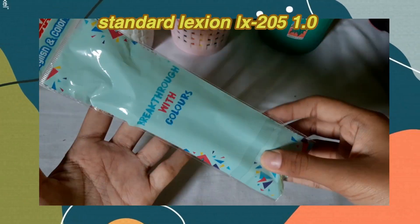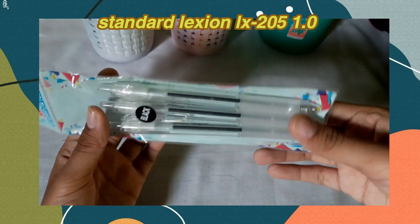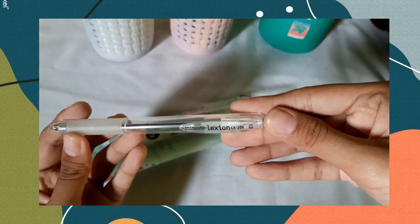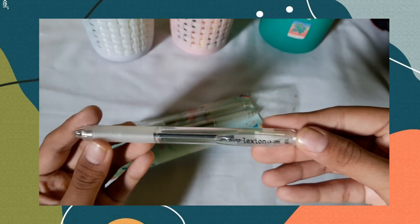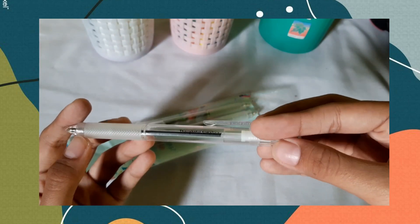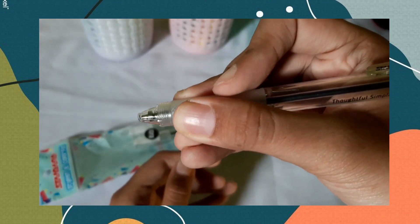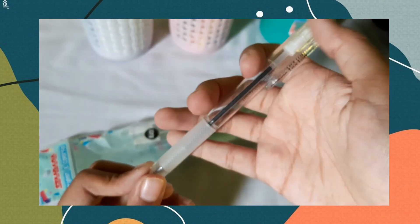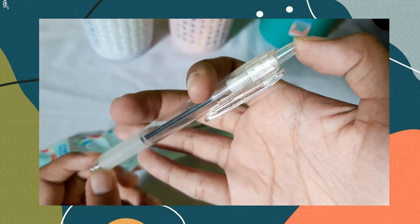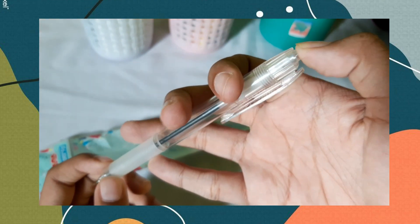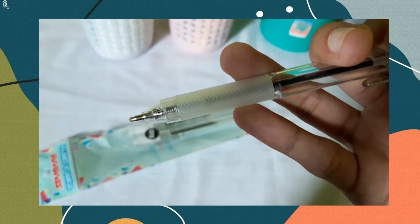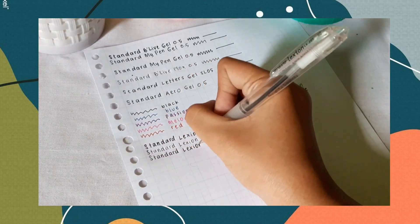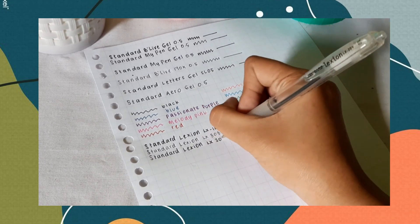Selanjutnya, ini juga seri Lexion. Nama produknya Standard Lexion LX205 1.0. Packagingnya masih sama. Terus desain pulpennya hampir sama kayak Aerogel pen. Ada gripnya juga. Tipenya juga retractable gitu, tapi ini bukan pulpen gel. Karena ini ukurannya 1.0, jadi tulisan yang dihasilkan tuh tebal banget. Tapi tebalnya bukan di warna.